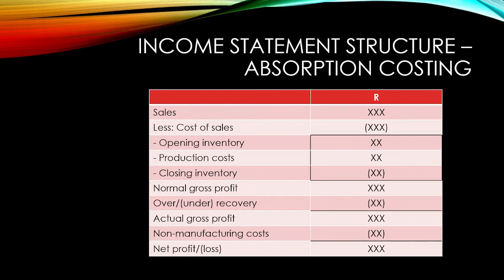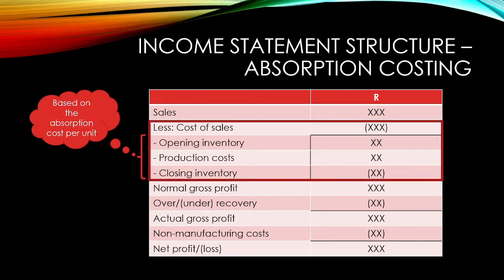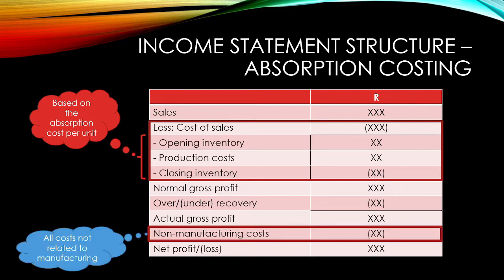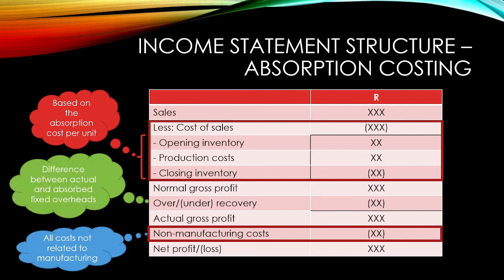What is the resultant absorption costing income statement structure? Absorption costing splits the costs based on their purpose or function — are the costs for manufacturing or non-manufacturing purposes? Our manufacturing costs relate to the production of the product and fall under our cost of sales. These costs are displayed above the gross profit line. Our non-manufacturing costs do not relate to manufacturing and are expensed after the gross profit line. We then have our under or over recovery line, which forms part of cost of sales and is therefore disclosed above the gross profit line. It is shown separately so that you can see its impact on the company's gross profit.